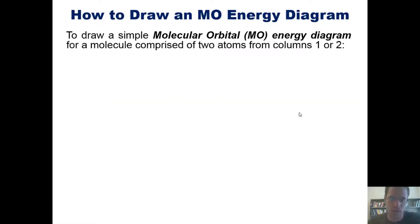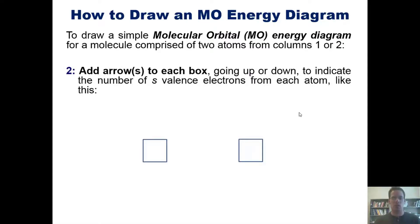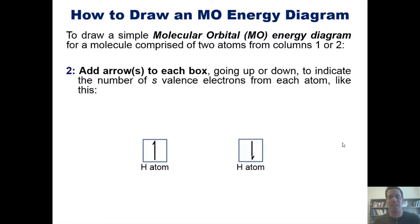Now I want to teach you how to draw an MO energy diagram. To draw a simple molecular orbital energy diagram for a molecule comprised of two atoms from columns one or two of the periodic table, follow these steps. Note that for molecules with more than two atoms or atoms outside columns one or two, it gets much more complicated. Step one: draw two boxes representing the atomic s orbitals at the same energy level, to the left and right of each other. Step two: add arrows to each box to indicate the number of s valence electrons for each atom.